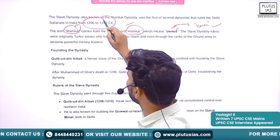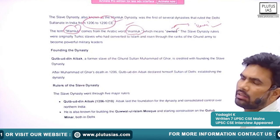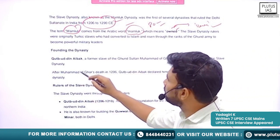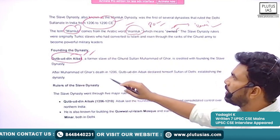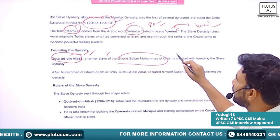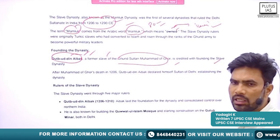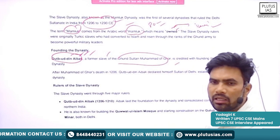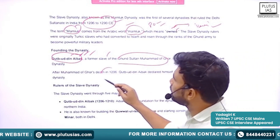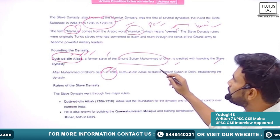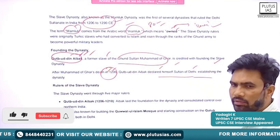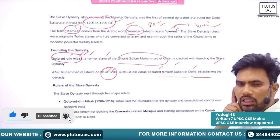The time period: they ruled between 1206 to 1290, approximately for 80 years. Founding of the dynasty was Qutubuddin Aibak. When Muhammad Ghori invaded India, he left Qutubuddin Aibak as the caretaker — the governor of the territories conquered in India. Once Muhammad Ghori was dead in 1206, Qutubuddin Aibak declared independence and declared himself as the Sultan of Delhi. In this way, the Slave Dynasty started.